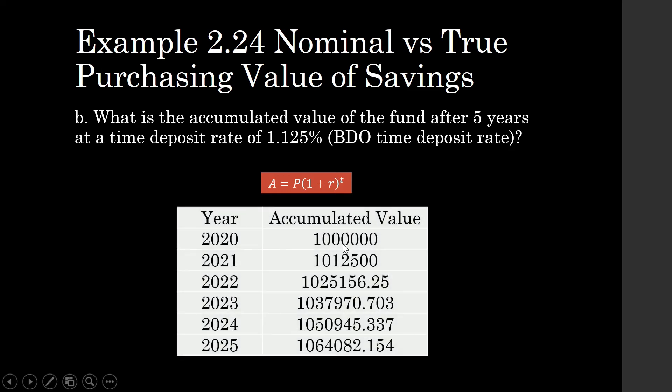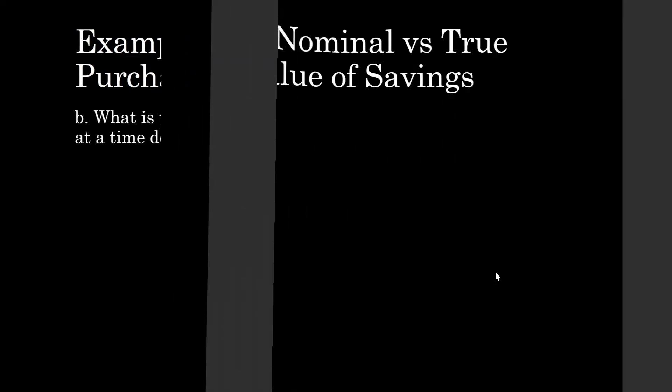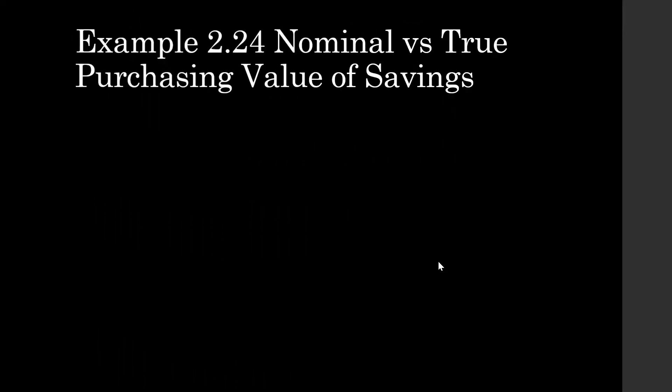After 5 years, your 1 million pesos will have nominally become 1,064,082 pesos. This is Example 2.24 — nominal versus true purchasing value of your savings deposit.